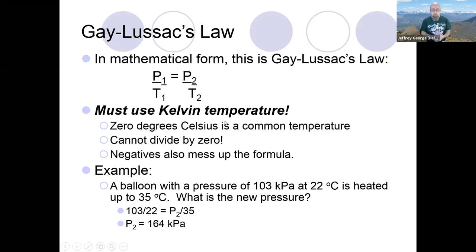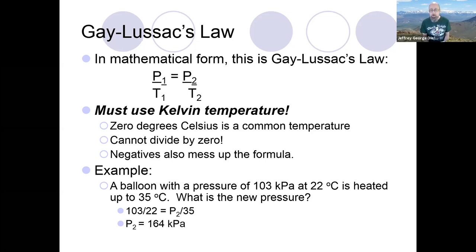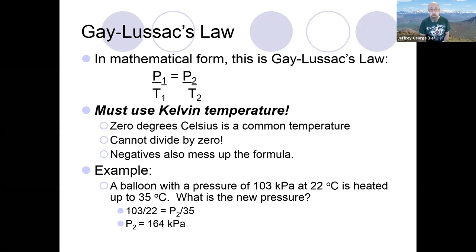Now, a very important note: we have to use Kelvin temperature. You cannot use Celsius in this formula because temperature appears in the denominator in two of these relationships. Celsius has zero as one of its most prominent temperatures, and zero cannot be in the denominator. Negatives also destroy the proportionality. So we must use Kelvin temperatures — make sure you're noting that throughout this unit you have to convert Celsius to Kelvin. It should be the first thing you do in any problem.